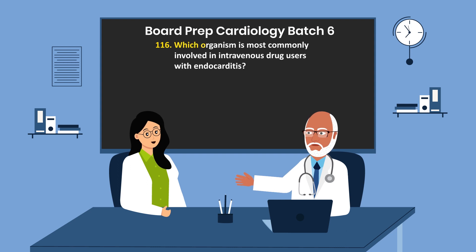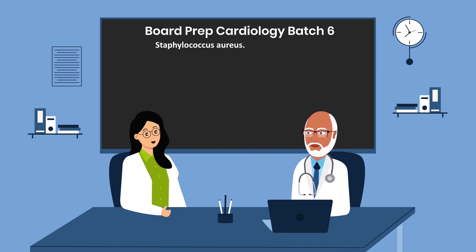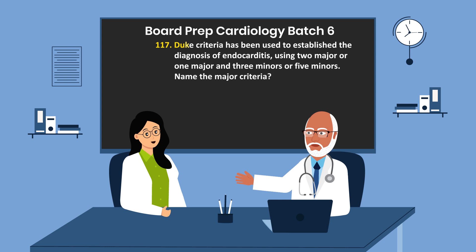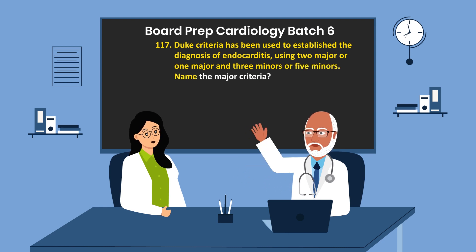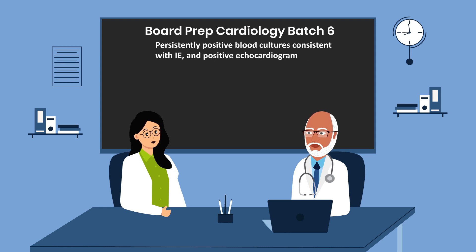Question 116. Which organism is most commonly involved in intravenous drug users with endocarditis? Staphylococcus aureus. Question 117. The Duke criteria has been used to establish the diagnosis of endocarditis using two major, or one major and three minor, or five minor criteria. Name the major criteria. 1. Persistently positive blood cultures consistent with infective endocarditis. 2. Positive echocardiogram.